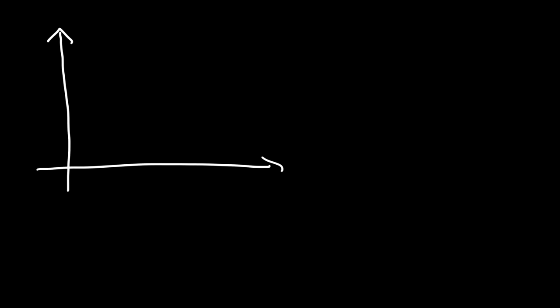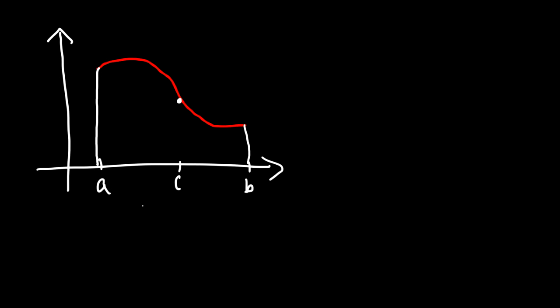In this video, we're going to go over the mean value theorem for integrals. Let's say we have some function which looks like this from A to B. There's some point C where the area under this region is equal to the area of the rectangle. The area of that rectangle is equal to the area under the curve from A to B.